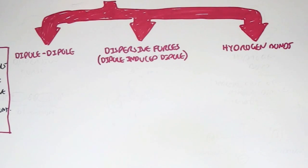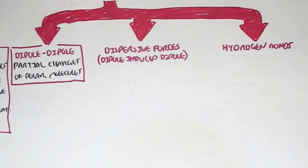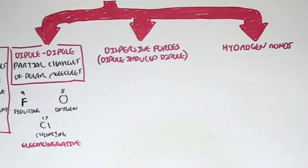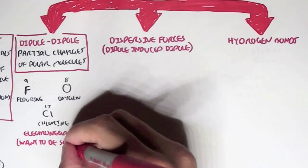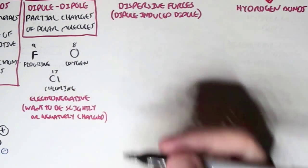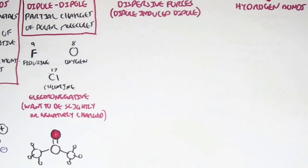Dipole-to-dipole forces involve attraction between partial charges of polar molecules. To understand this, consider highly electronegative elements such as fluorine (F, #9), oxygen (O, #8), and chlorine (Cl, #17). These elements strongly attract electrons, making themselves more negatively charged. Here's an example of a dipole molecule consisting of one oxygen, three carbons, and some hydrogens.